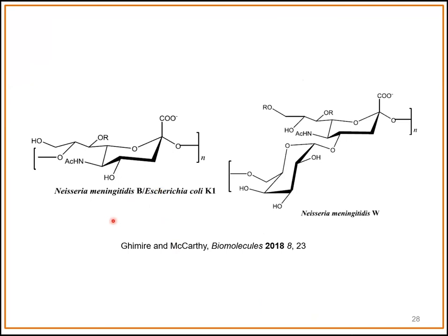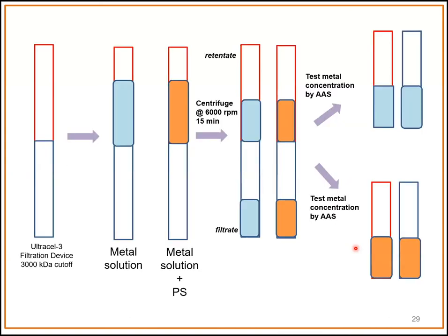To do this, we used colominic acid, which is an alpha-2,8-linked polysialic acid — basically the same structure in Neisseria meningitis B and E. coli K1. We also used some polysaccharide from Neisseria serogroup W, a generous gift of Dr. Willy Van. For our assay, we use 3-kilodalton cutoff filtration devices. In the control, we have just the metal solution; in the reaction, we have the metal solution plus the polysaccharide.